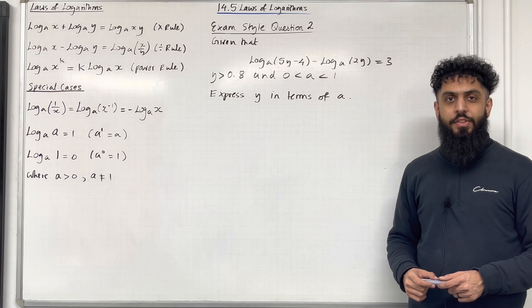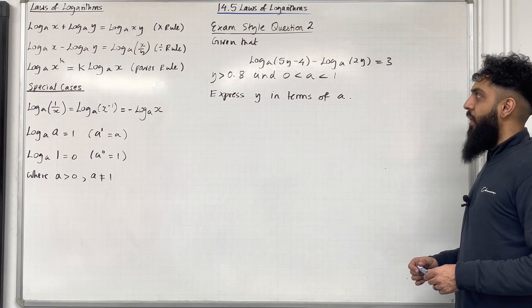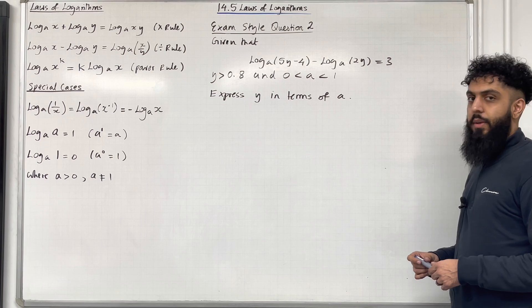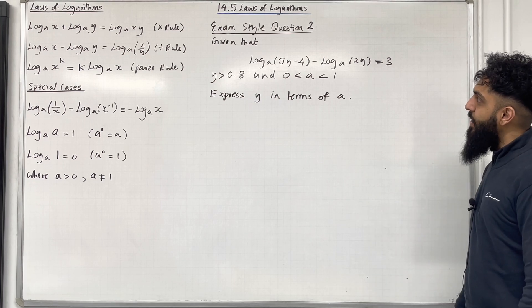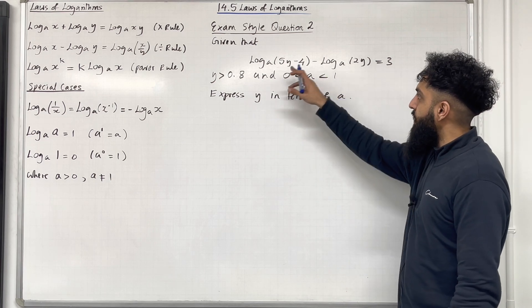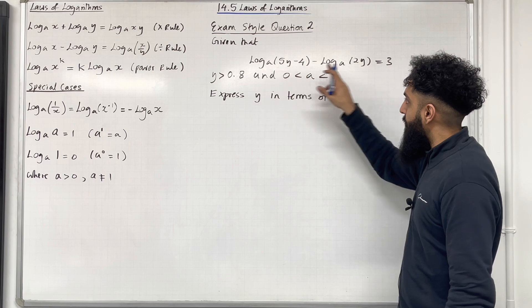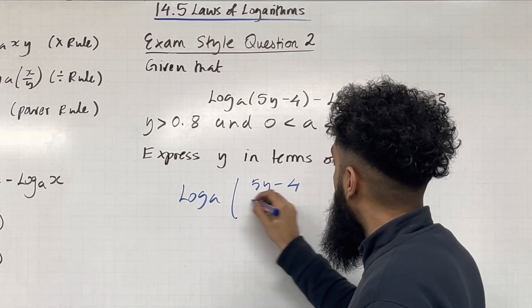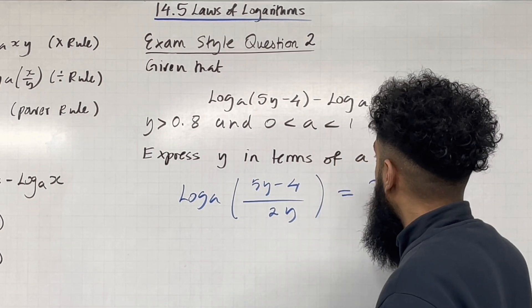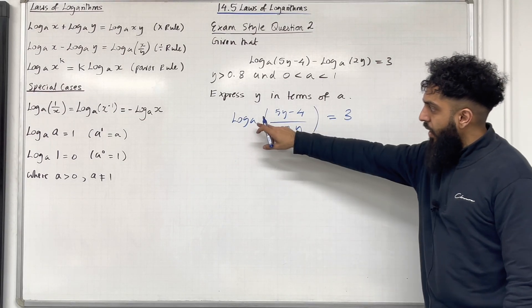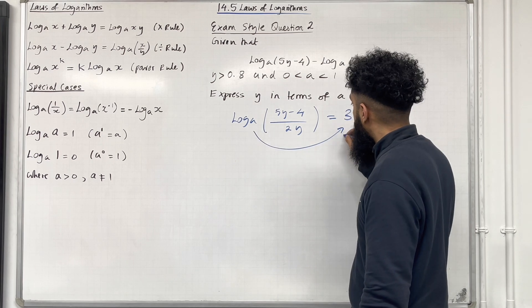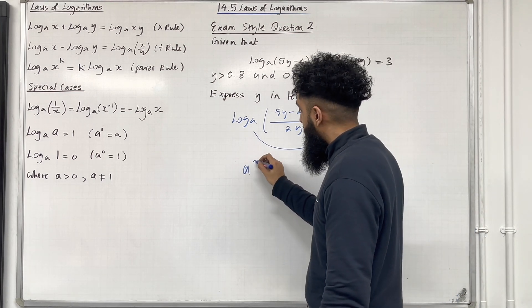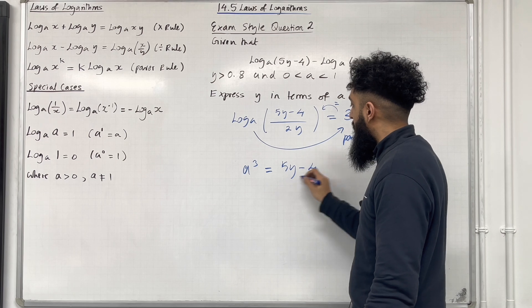Moving on to exam style question 2. Given that log base A of 5y minus 4 minus log base A of 2y is equal to 3, where y is greater than 0.8 and A is between 0 and 1, express y in terms of A. What we need to do is firstly combine the two logarithms using the division rule — both logarithms have the same base. So using the division rule we have log base A of (5y minus 4) divided by 2y must equal 3. We can rewrite this: the base is A, so A to the power 3 is equal to (5y minus 4) over 2y.